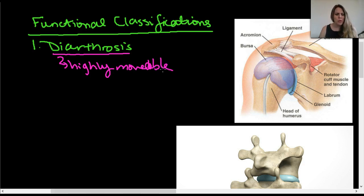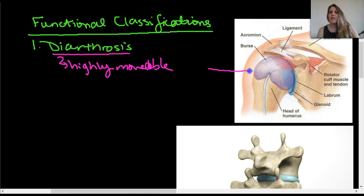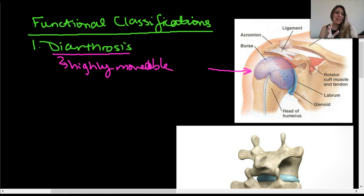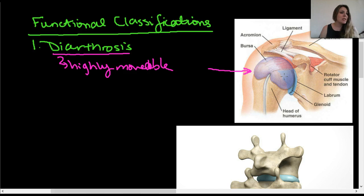Examples of diarthroses include your shoulder joint and your hip joint. The shoulder joint is fascinating because not only is it the most movable joint in the body, it's also very unstable. People get their shoulders dislocated all the time, so we'll discuss the ligaments and muscle structures that help stabilize it. Highly movable joints are diarthroses.